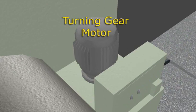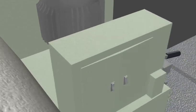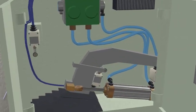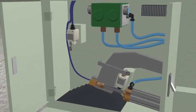The turning gear is driven by an AC motor and can be engaged automatically or manually to rotate the rotor at a low speed when the steam turbine is out of service.